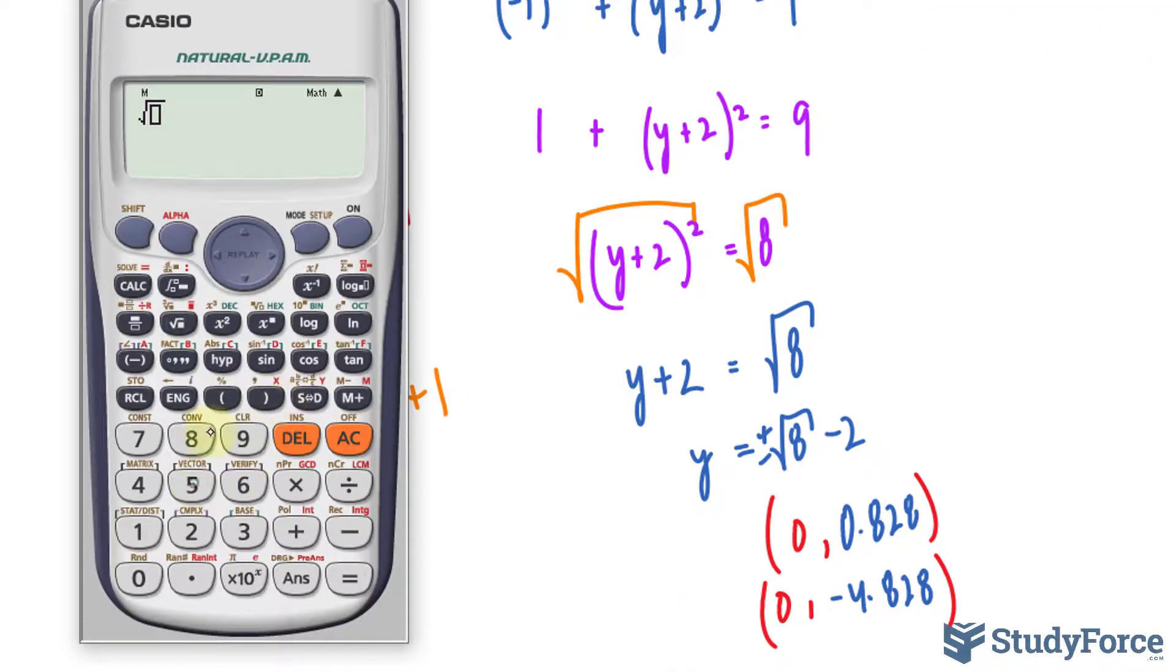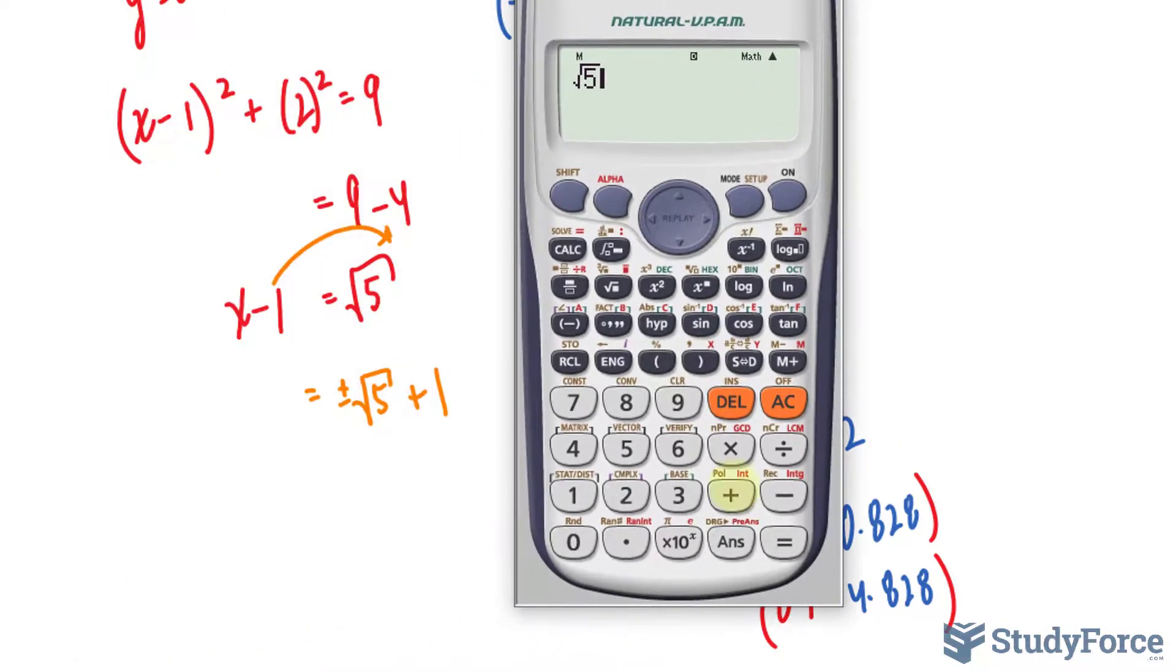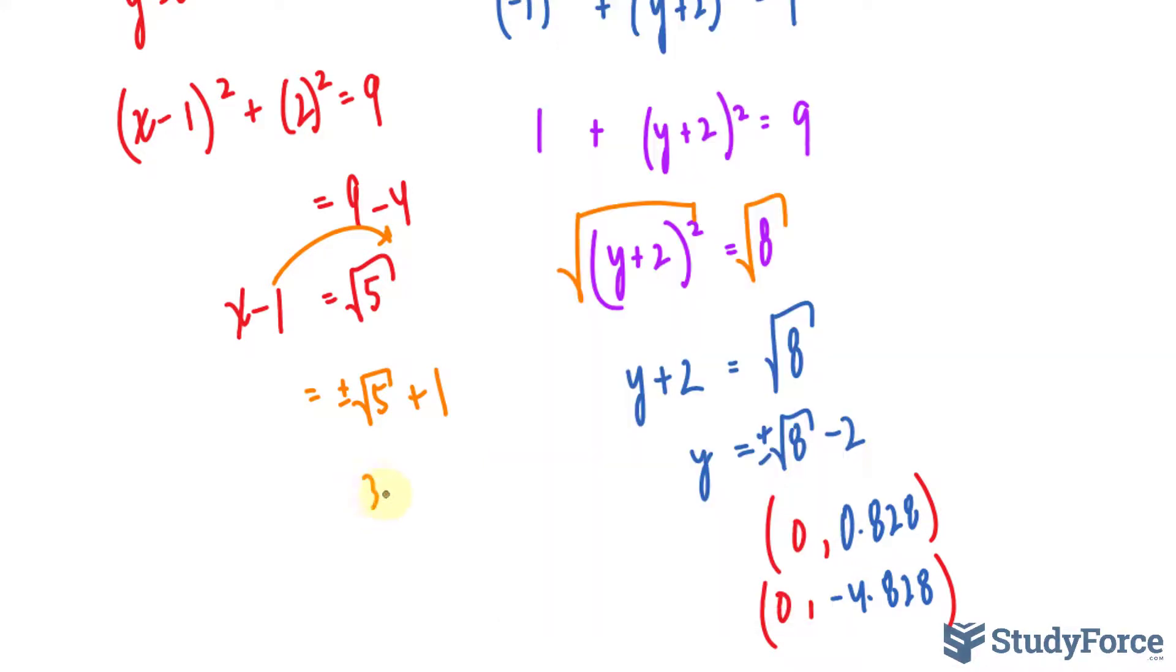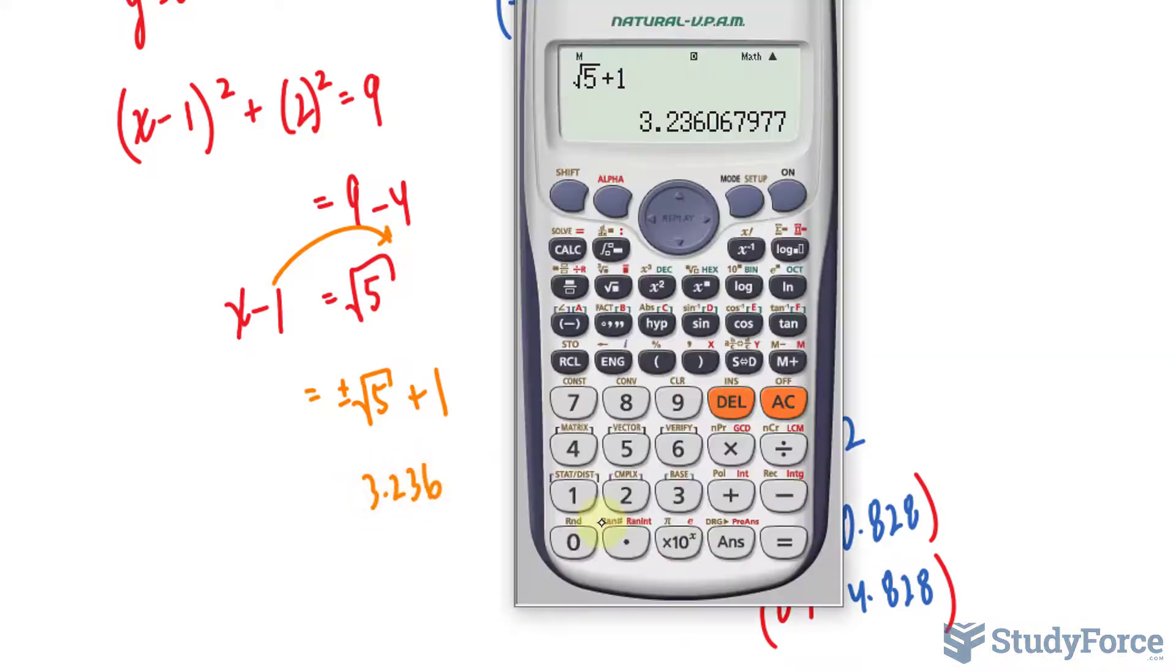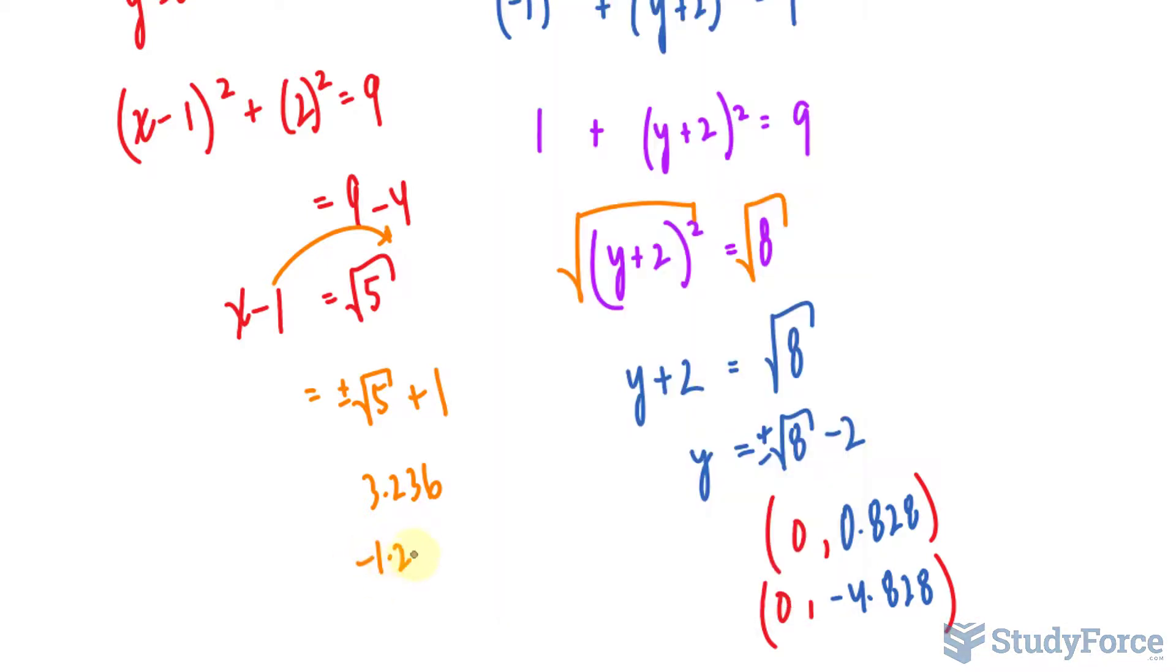Plus minus the square root of 5 plus 1. Let's use our calculator again. Square root of 5 plus 1 and then we'll do the negative version. So that's 3.236, and now the negative version. It's negative 1.236.